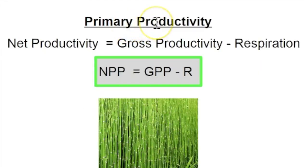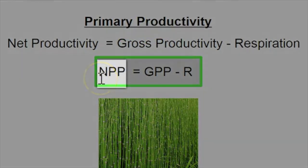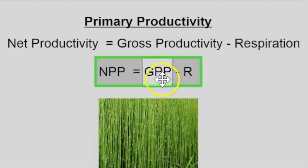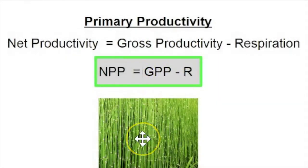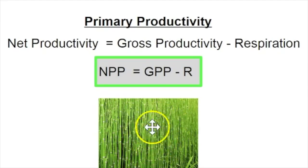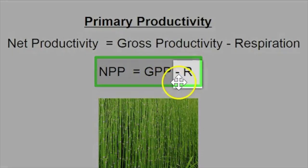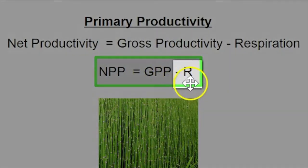Primary productivity can be thought of in two separate ways: net primary productivity, or NPP, and gross primary productivity, or GPP. Keep in mind that all organisms need energy, so plants, just like animals, undergo cellular respiration to break down organic material to make ATP. This is why net productivity equals gross primary productivity minus respiration.